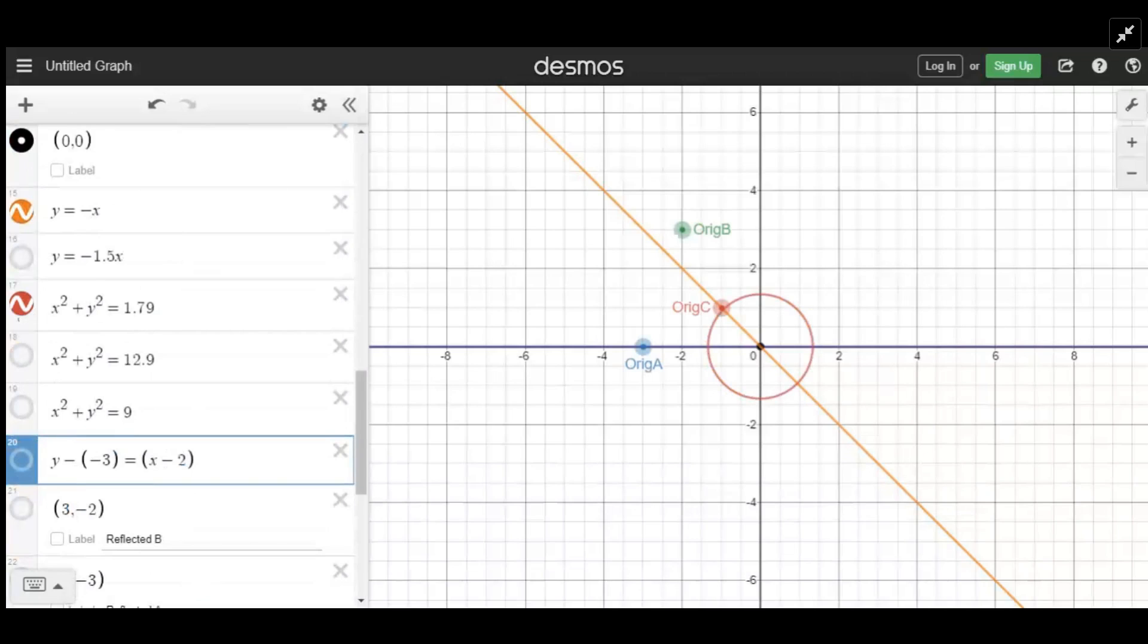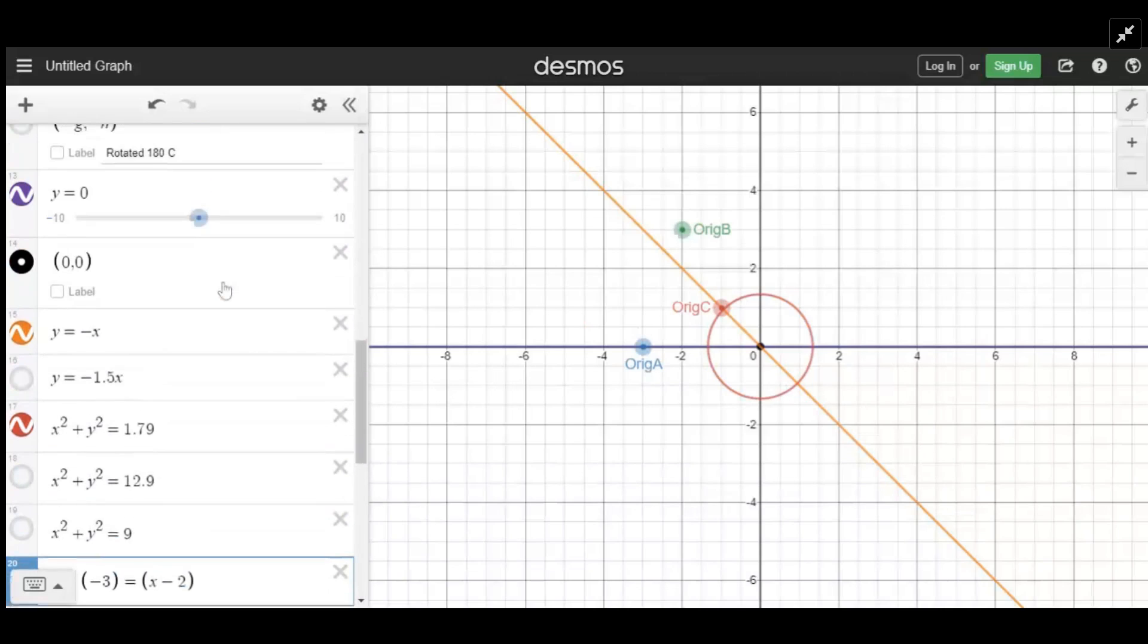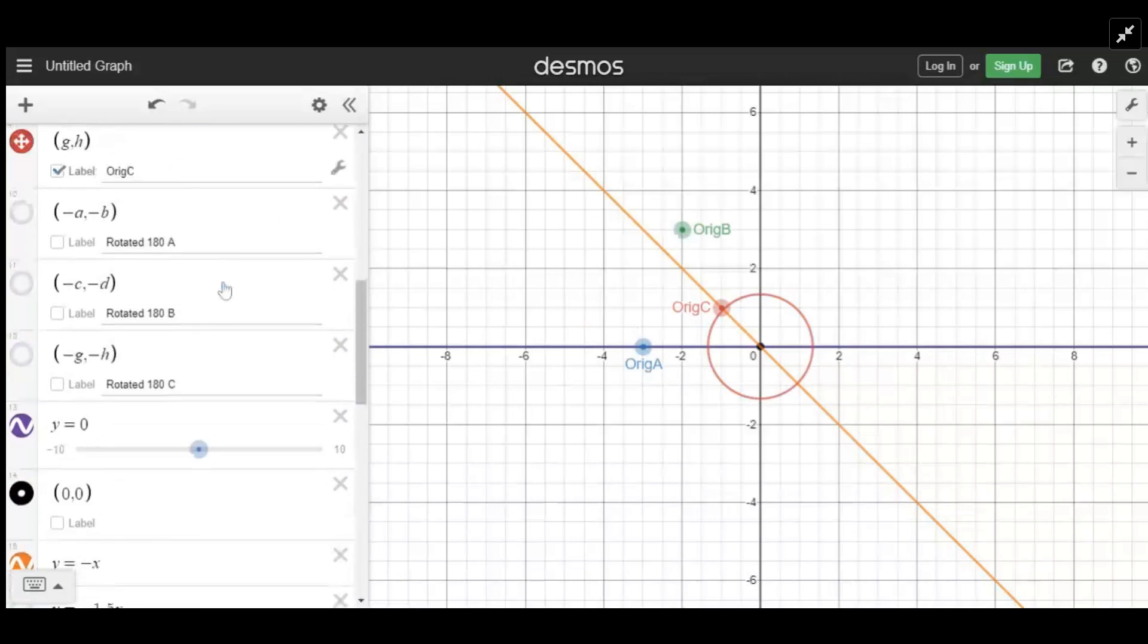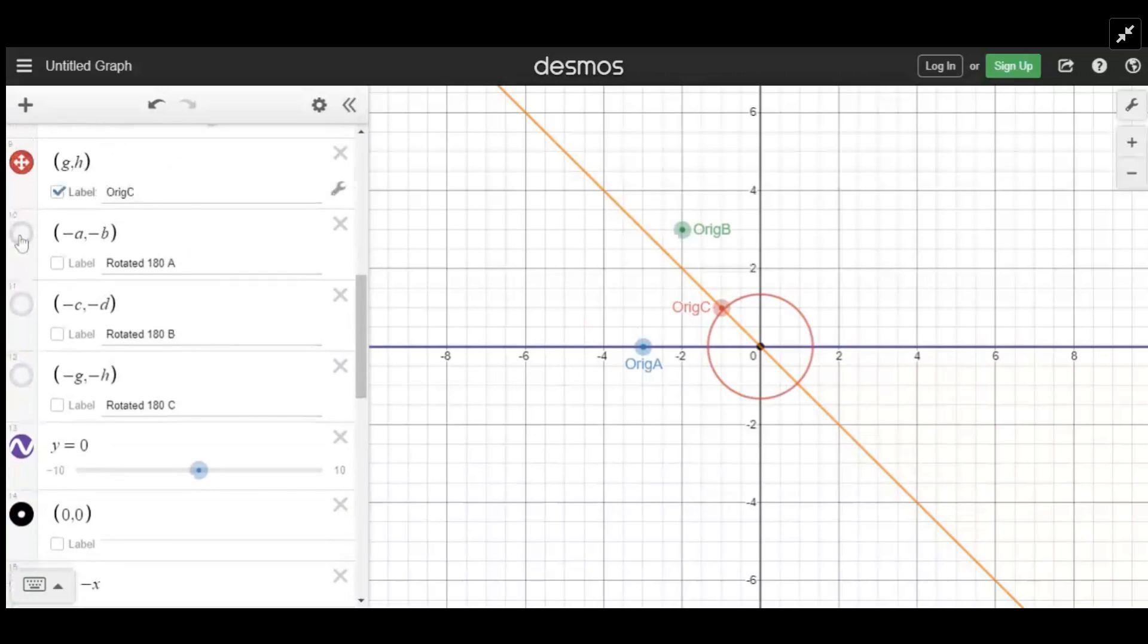or very close to through point C, and then you think about this: if I started here and rotated it 180 degrees to here, I would be at approximately one, negative one. And so that is my rotated C.